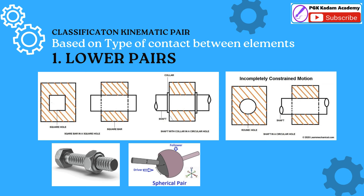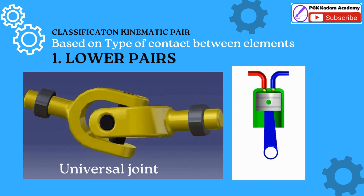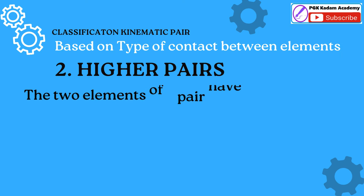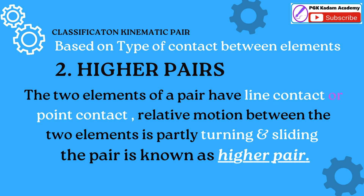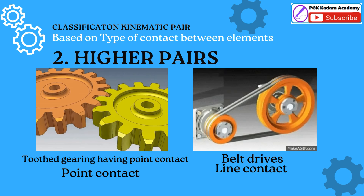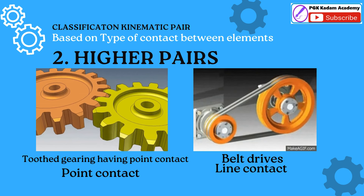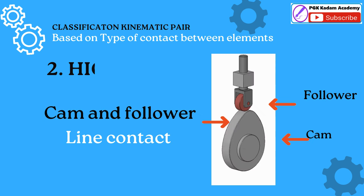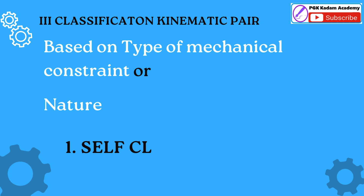Examples of lower pairs include a nut turning on a screw, a shaft rotating in a bearing, a universal joint, and all pairs of a slider-crank mechanism. Higher Pair: When the two elements of a pair have line contact or point contact when relative motion takes place, and the motion between the two elements is partly turning and sliding, then the pair is known as a higher pair. Examples include tooth gearing having point contact, belt and rope drives, ball and roller bearings, and cam and follower.